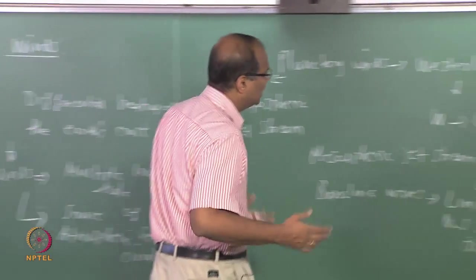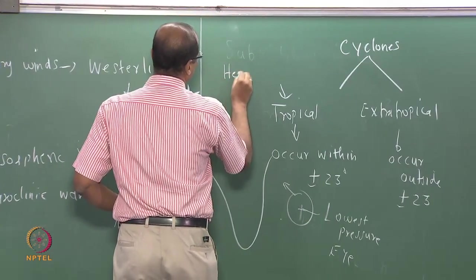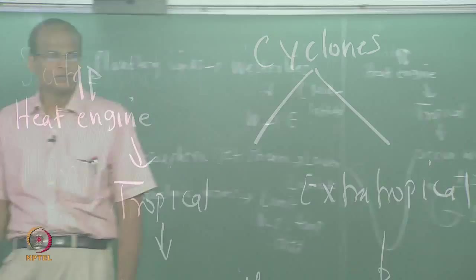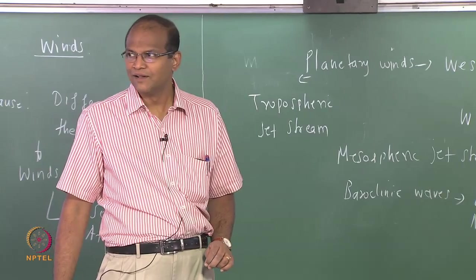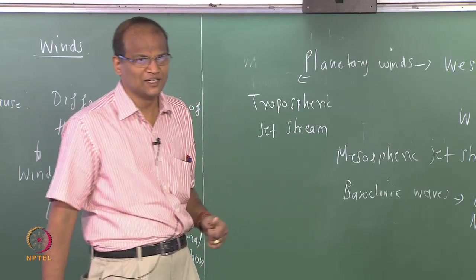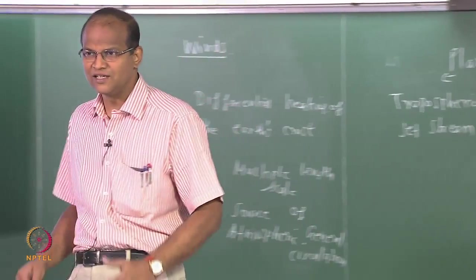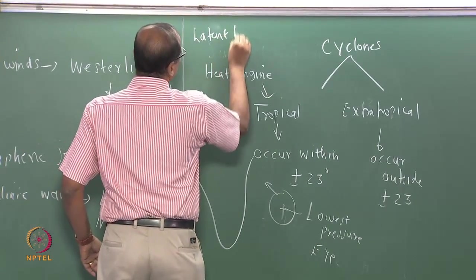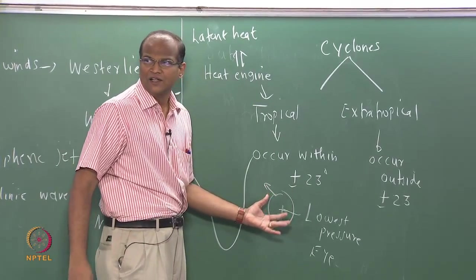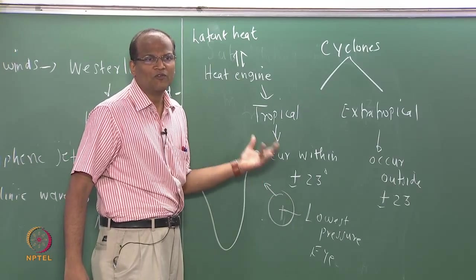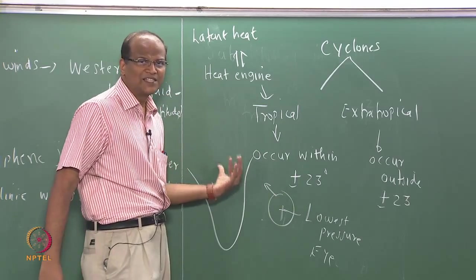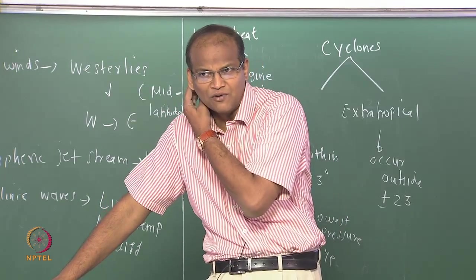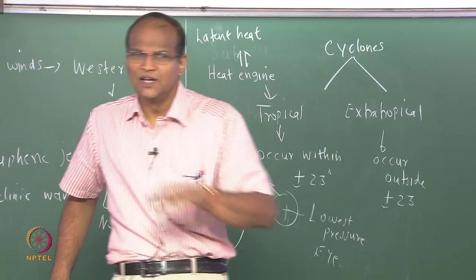The cyclone by definition is a big heat engine. How does it get energy? Not by burning fuel — the source of energy is the release of latent heat of condensation: water vapor becoming water. Whenever the cyclone is in the ocean, because of this latent heat and transfer processes, it picks up a lot of energy and becomes more virulent and violent. As it hits land, its source of energy is reduced because condensation is no longer available, and after a few hundred kilometers it completely dissipates.